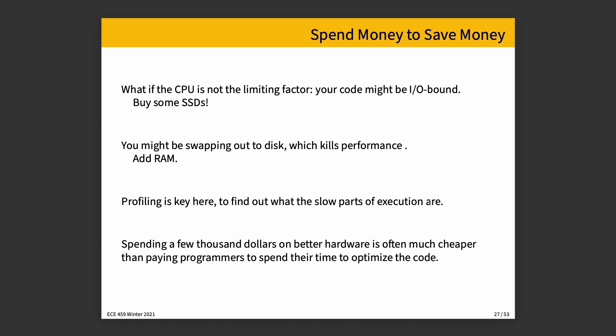Sometimes the CPU is not your limiting factor — your code might be IO-bound, meaning IO is the slow step limiting your speedup. In that case, throwing money at it might actually be a good idea: buy some SSDs and it will dramatically improve performance. If you're swapping out to disk, that's really ruining your performance. Buying some RAM might improve the situation a lot. Spending a few thousand dollars on hardware in such a scenario is probably a better investment than asking many programmers to invest their time trying to make your program faster. RAM is cheap, SSDs are not that expensive, but programmer time is an expensive resource. Don't waste people's time.